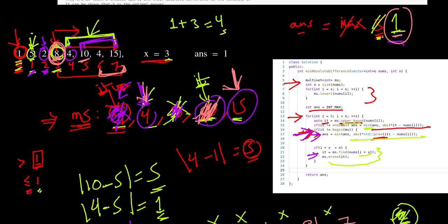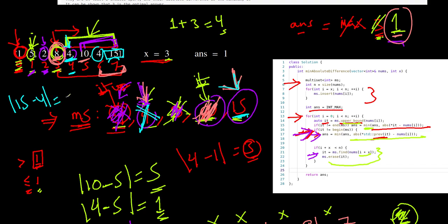Next is element 4 at index 4. Since 4 + 3 = 7, we only have one element to check, and we remove 4 from the multiset. What remains is just 15. The first element greater than 4 is 15; 15 minus 4 equals 11, which is greater than 1. There is no element less than 4 since the iterator is at the beginning of the multiset, so no update occurs.